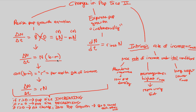Final point: do not get caught up in the equations and derivations. The biggest things to understand are how and why we arrived at delta N over delta T equals rN. Don't worry too much about the instantaneous growth equation — just know it's a differential calculus approach. You can look at the graph in your textbook that illustrates instantaneous versus discrete growth. And remember the concept of r-max.